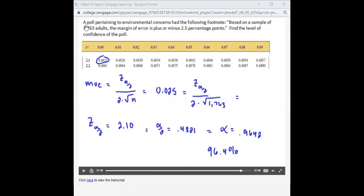Hi, I wanted to talk to you about this problem. It's where you have a poll. We have a sample of 1,763 adults. They tell us what the margin of error is, 2.5%, and we want to find the level of confidence.